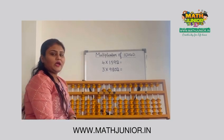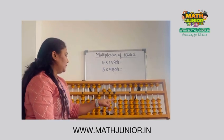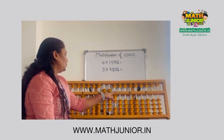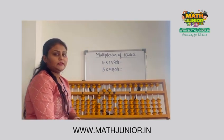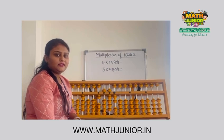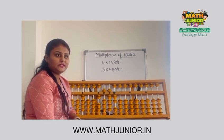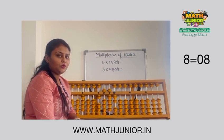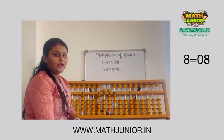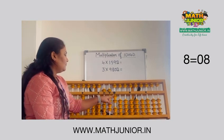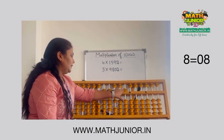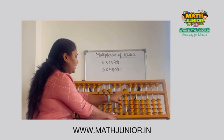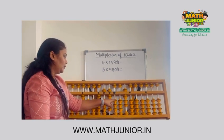First we have to start with the units. So 2 times 4 is 8. Here we got a single digit, that's why we have to make it a double digit by putting 0. That will be considered as 0. So after 2, place 0 and add to 8. Then remove 2.